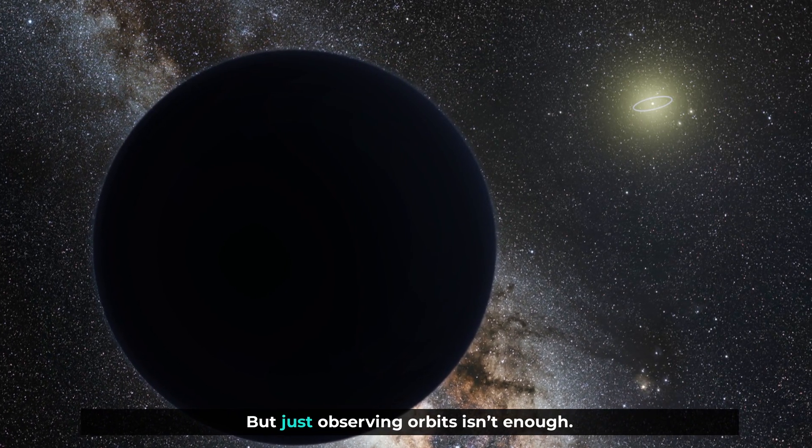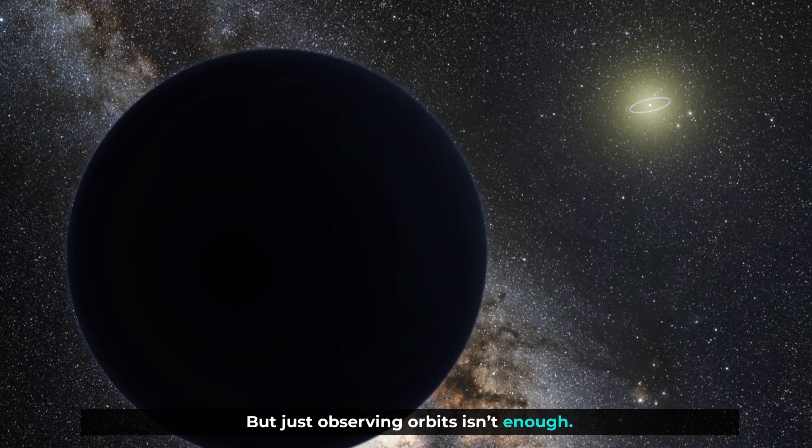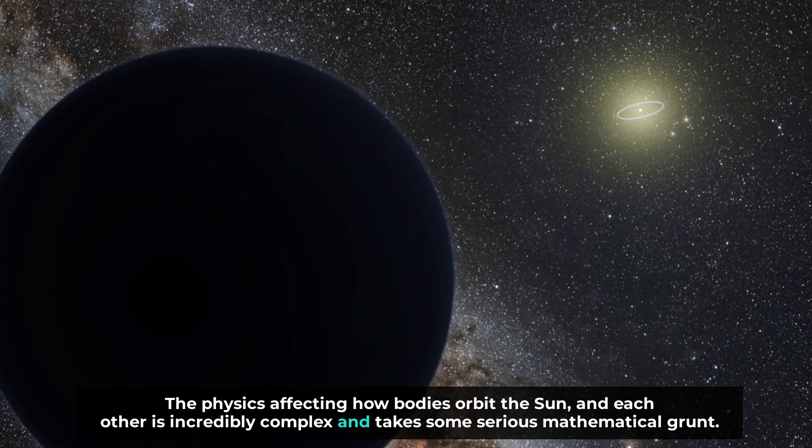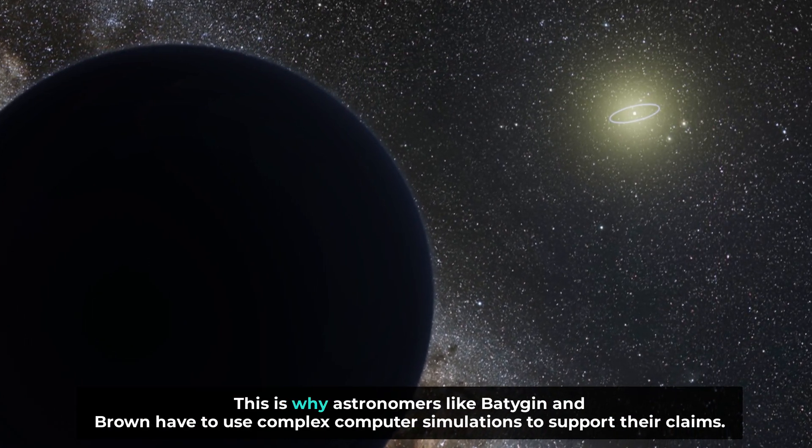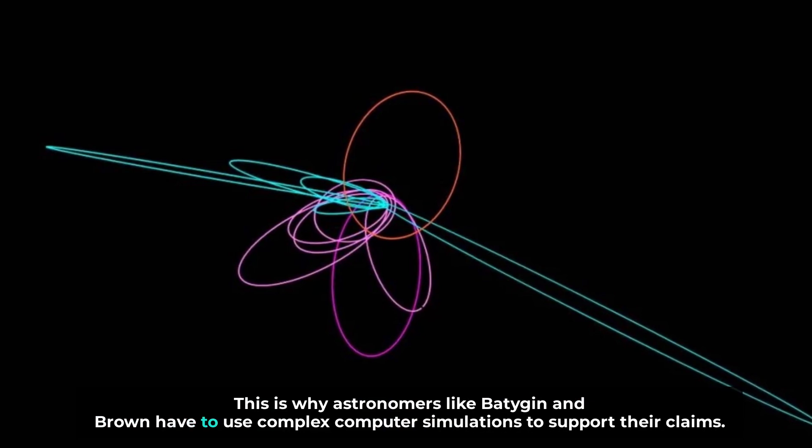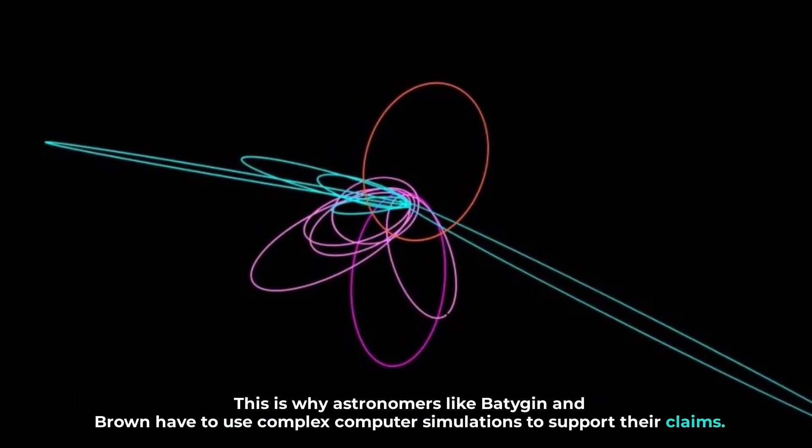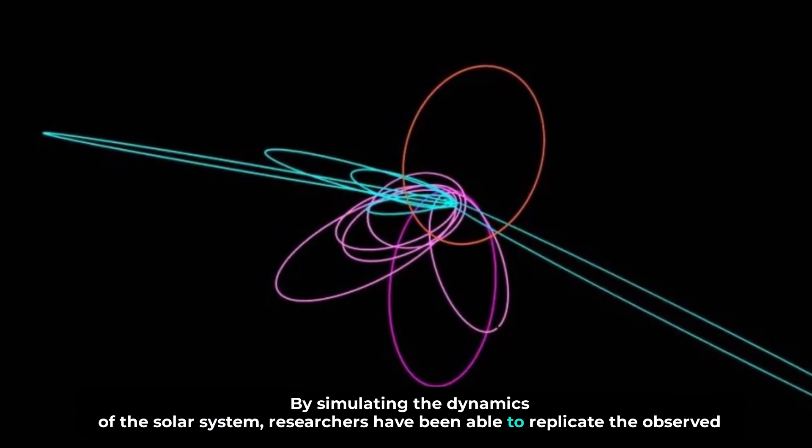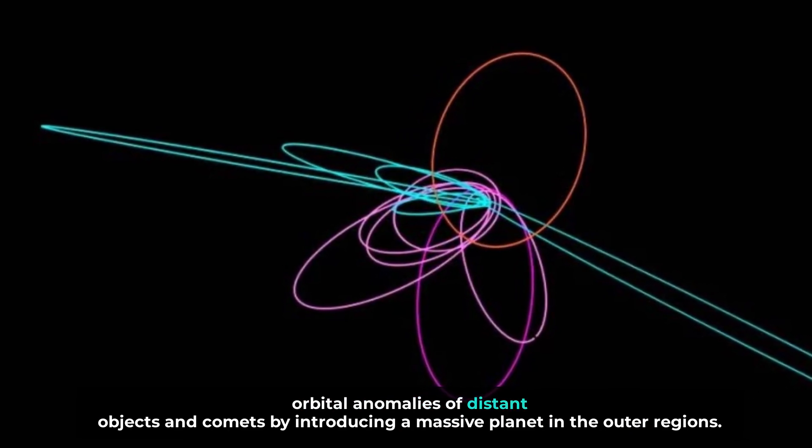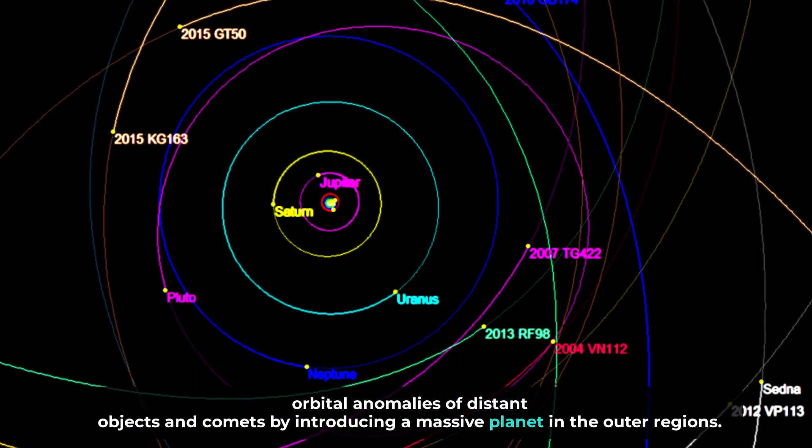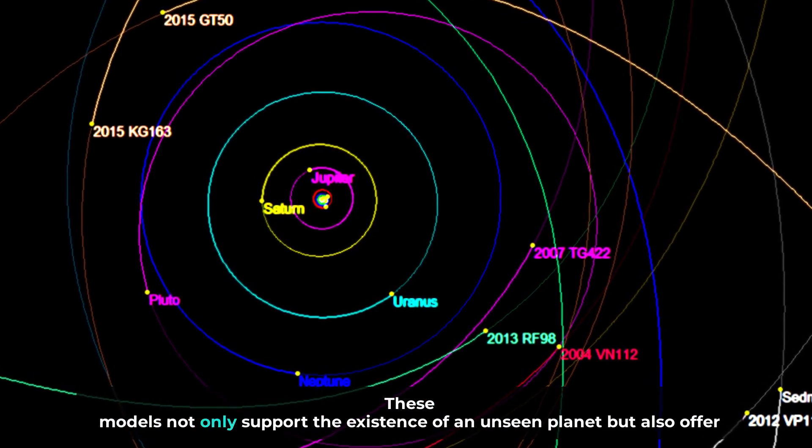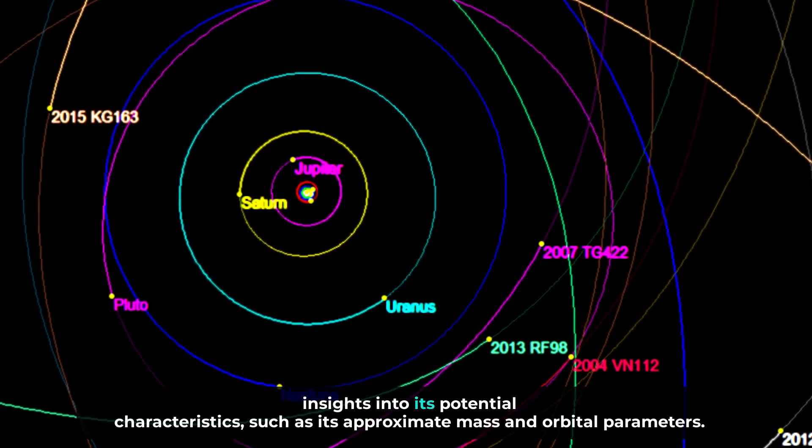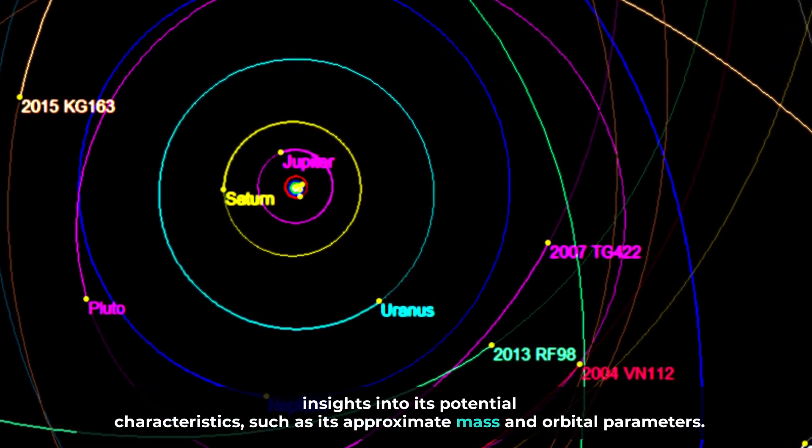Computer simulations. But just observing orbits isn't enough. The physics affecting how bodies orbit the sun and each other is incredibly complex and takes some serious mathematical grunt. This is why astronomers like Batygin and Brown have to use complex computer simulations to support their claims. By simulating the dynamics of the solar system, researchers have been able to replicate the observed orbital anomalies of distant objects and comets by introducing a massive planet in the outer regions. These models not only support the existence of an unseen planet, but also offer insights into its potential characteristics, such as its approximate mass and orbital parameters.